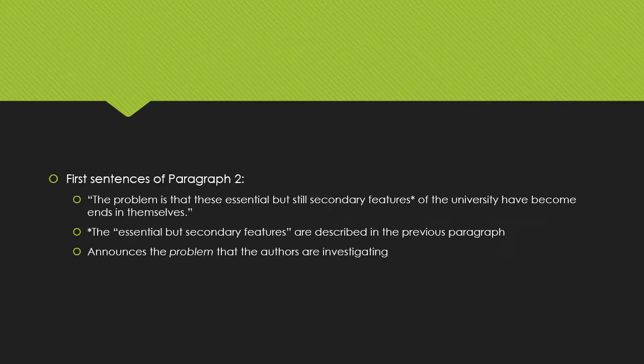Skimming down into paragraph two, we see why the authors are writing this article. They state that 'the problem is that these essential but still secondary features of the university' — things like sports, social life, research, etc. — 'have become ends in themselves.' This tells us why they're writing the article: they believe the university has a particular mission, but that mission has become subordinated to other secondary features.